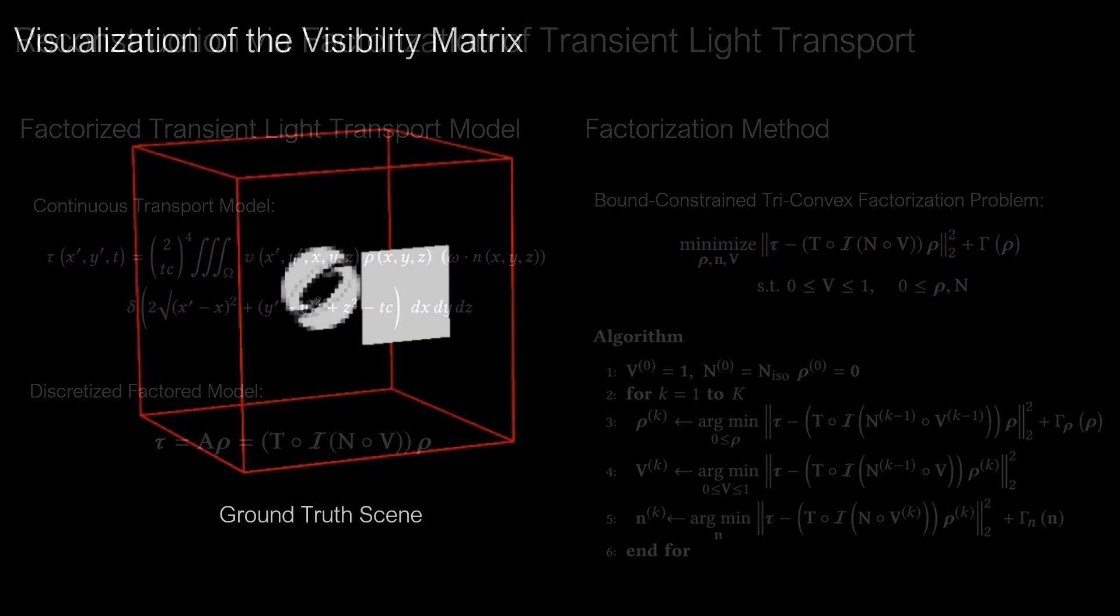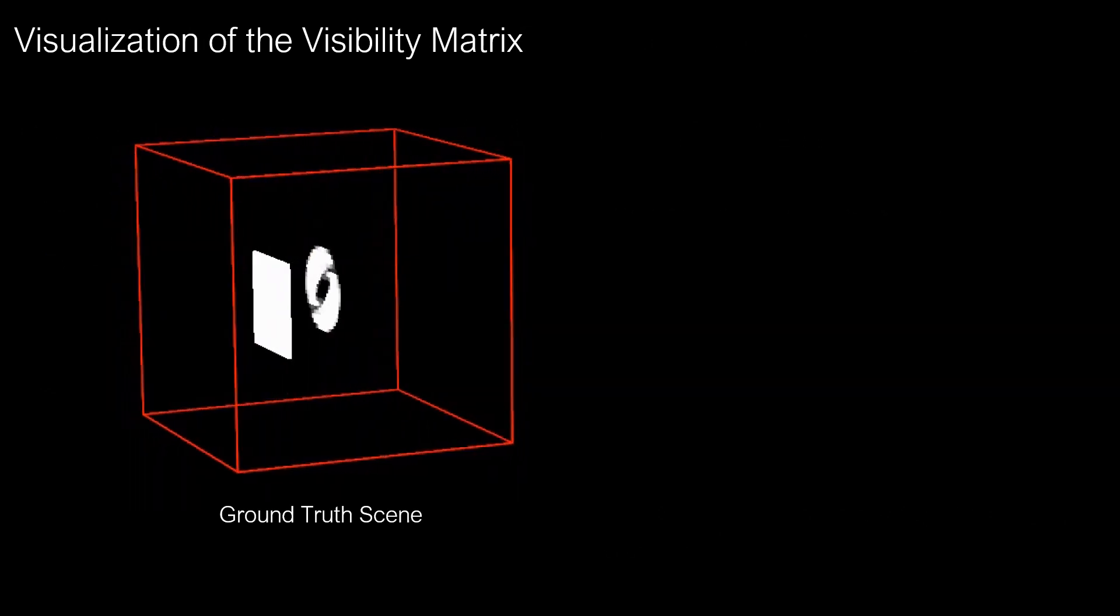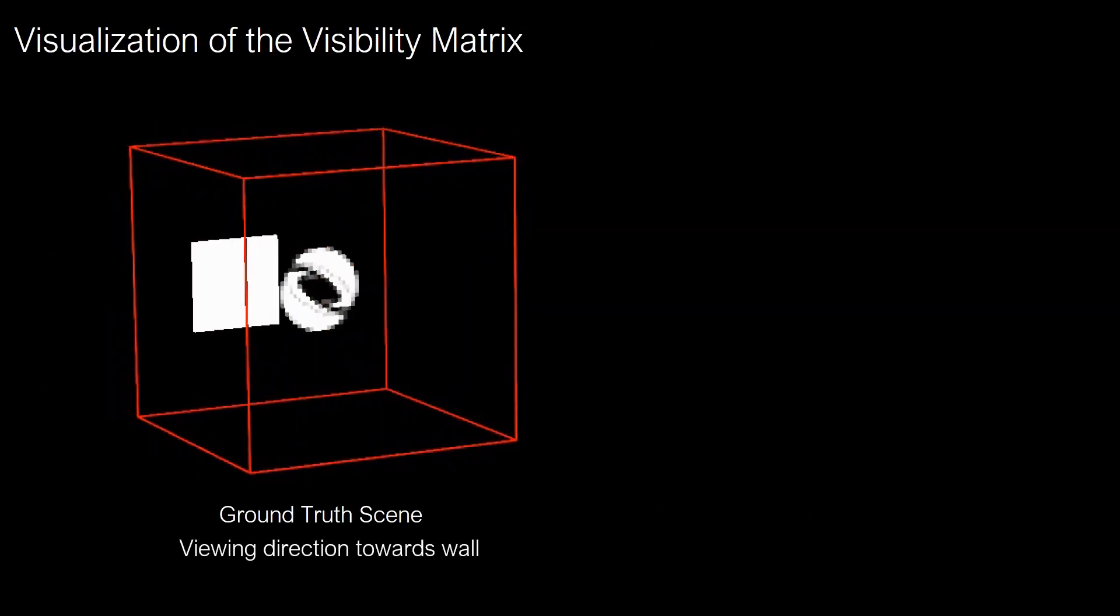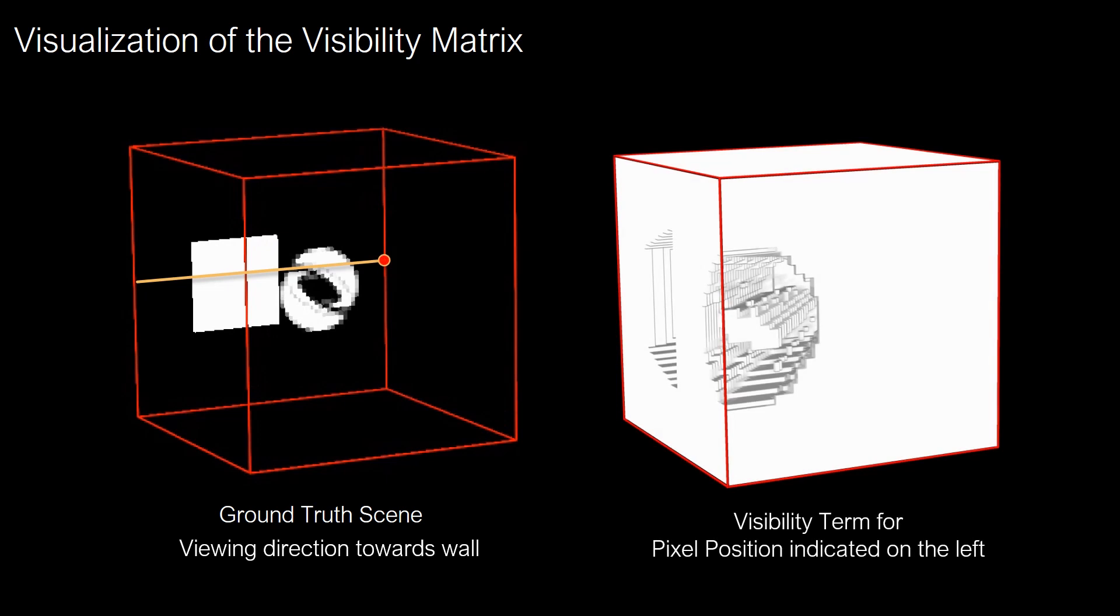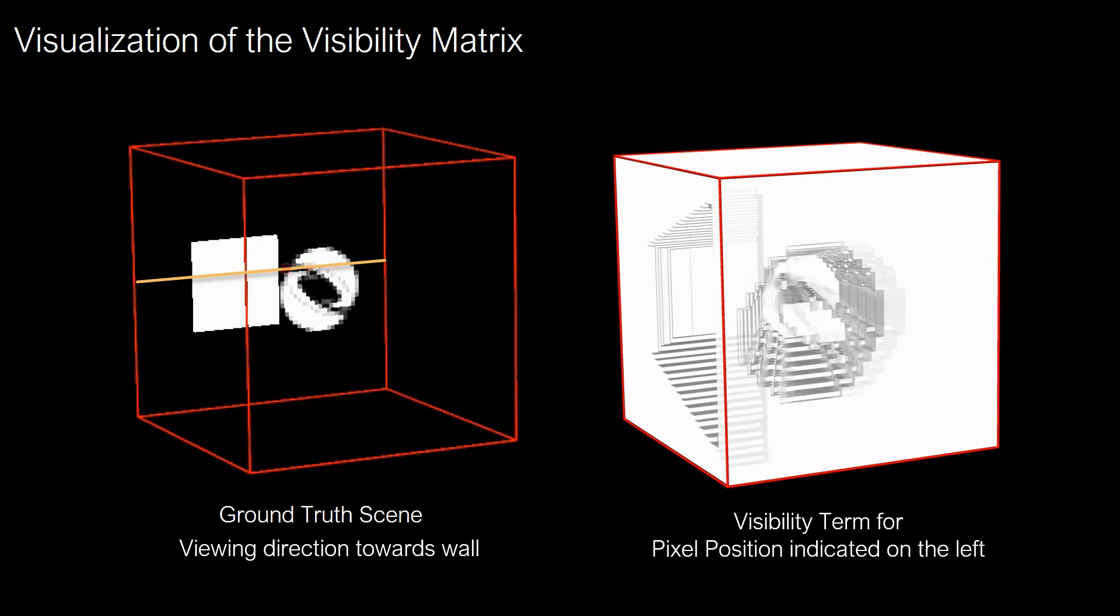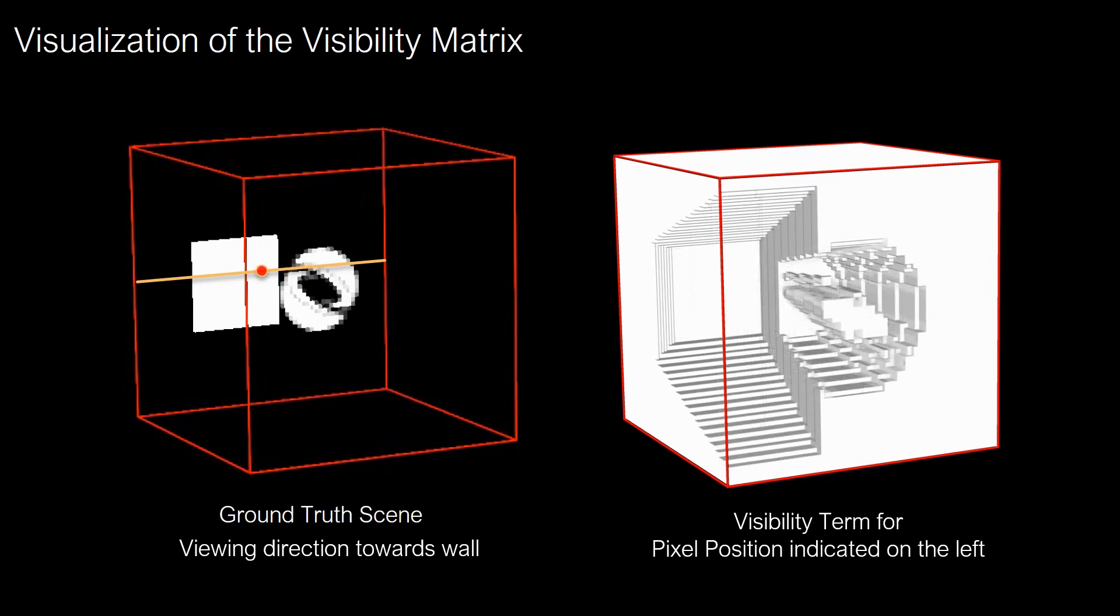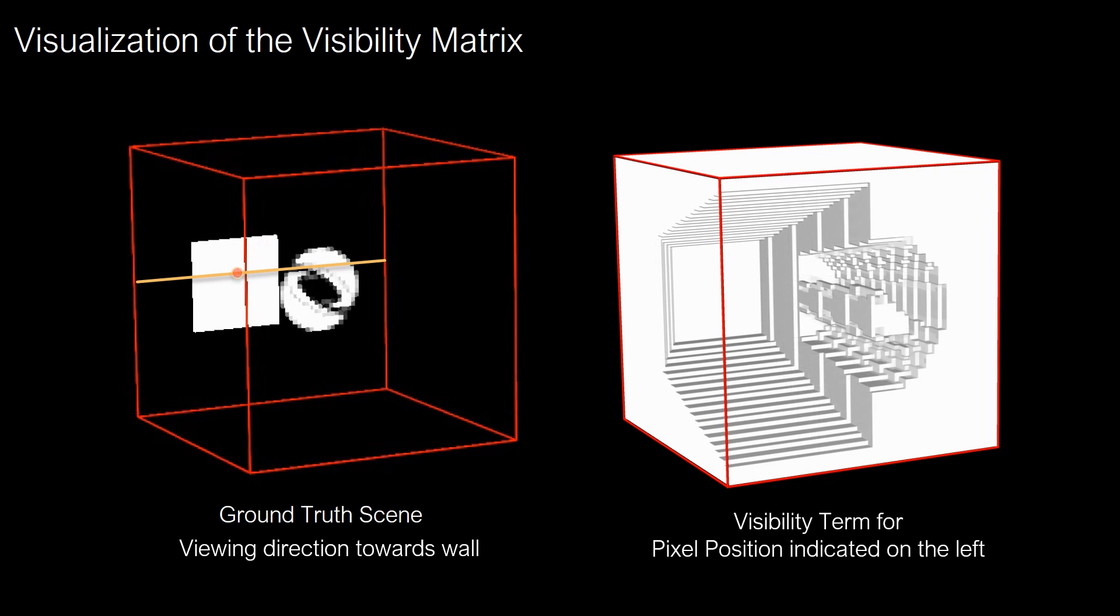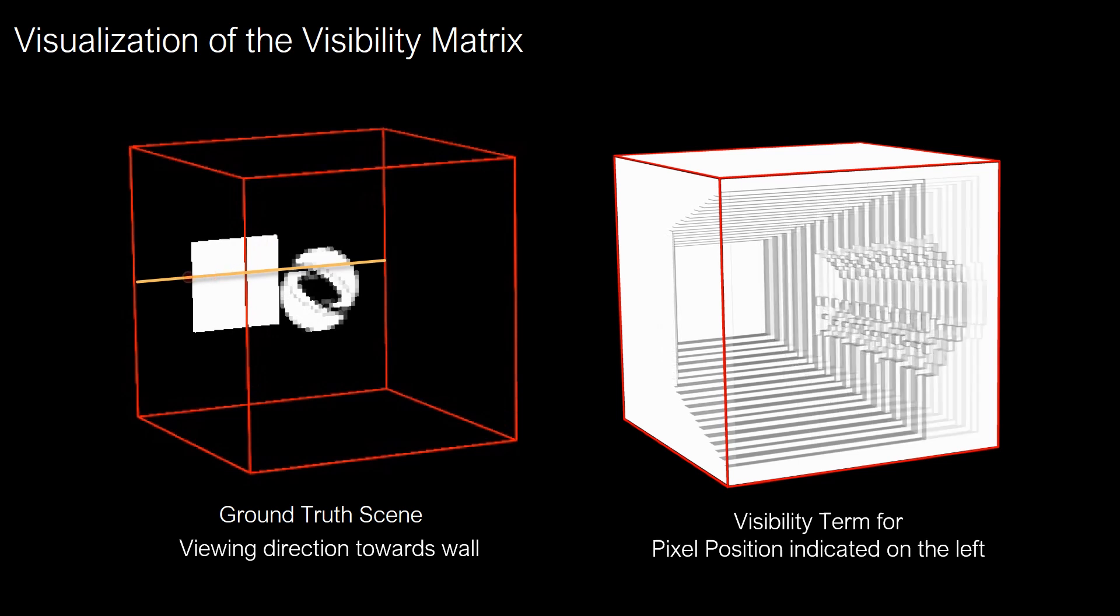Here we show a visualization of the visibility terms corresponding to the scene on the left. We visualize visibility volumes corresponding to scan lines as indicated in the scene on the left. As the scan position moves along the scan line, the corresponding visibility terms take the shape of shadows cast from the scanning point through the volume.